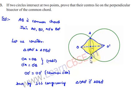Therefore, by the SSS property of congruency, we can say both triangles are congruent. That is, triangle OAO' is congruent to triangle OBO'. Since two triangles are congruent, their respective corresponding angles can be equated. Therefore, angle AO O' is equal to angle BO O'.